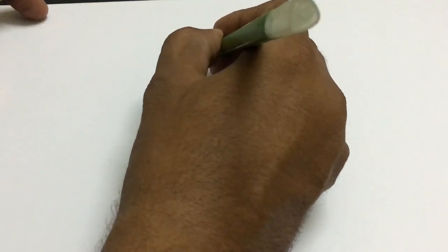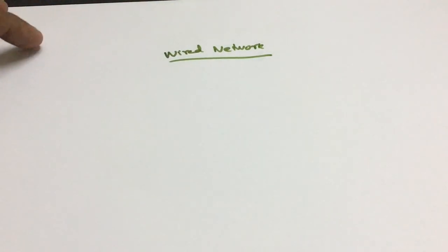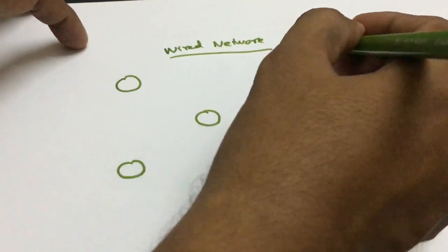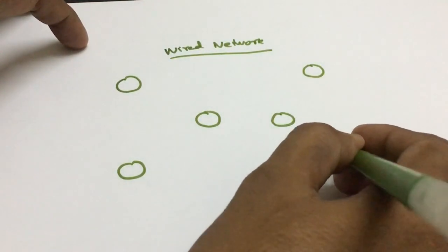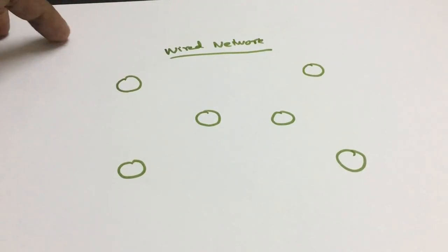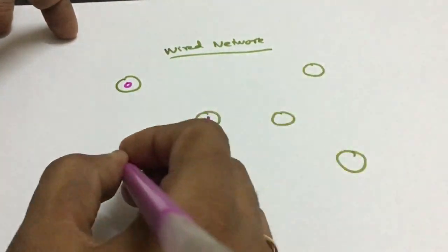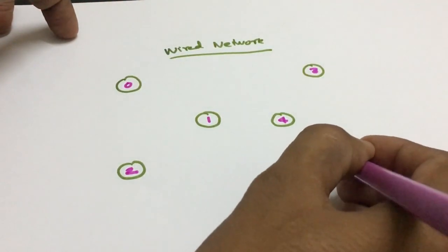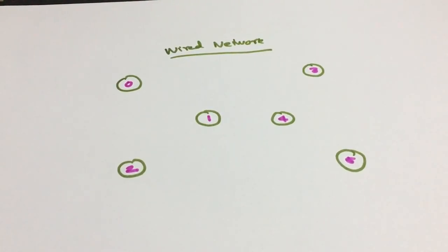I am using a concept called a Wired Network. I am going to design six nodes — node number 1, 2, 3, 4, 5, and 6. I will name them 0, 1, 2, 3, 4, and 5. So totally 0 to 5, I have created six nodes. Since it is a wired network, all these nodes will have a wired connectivity.